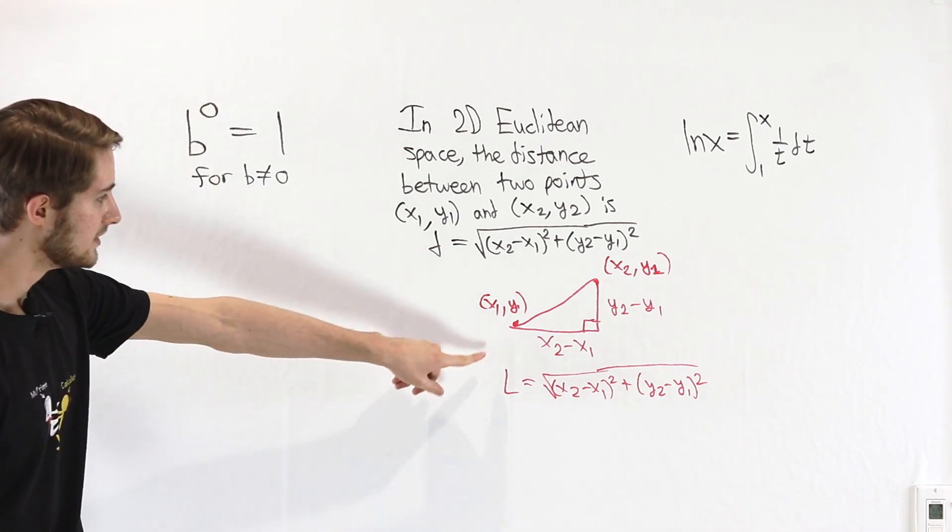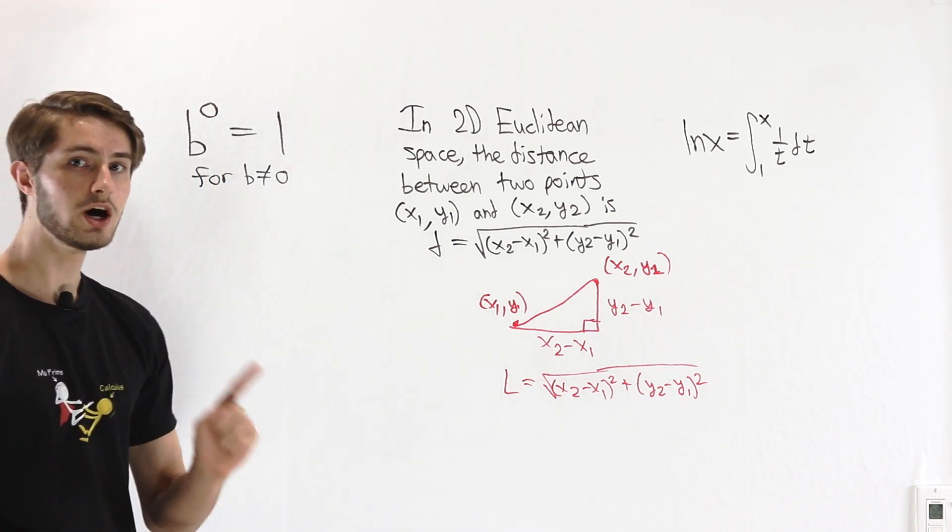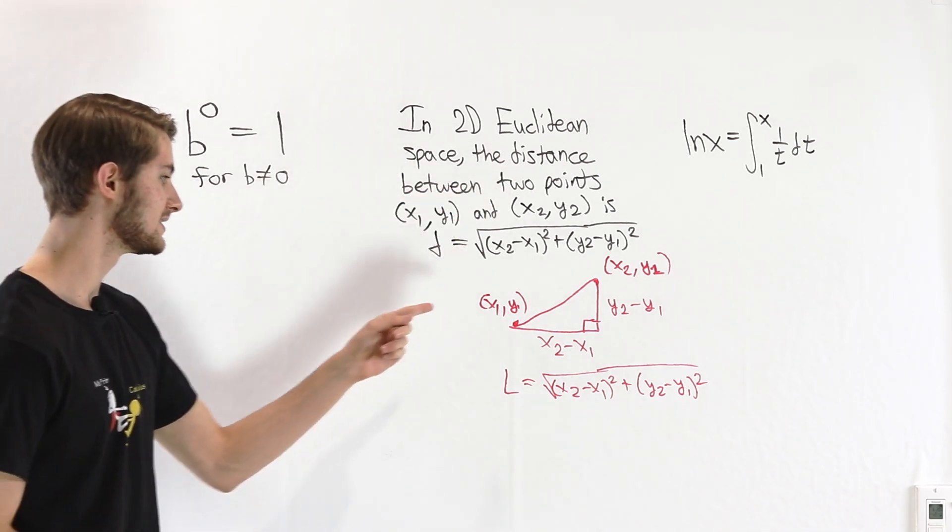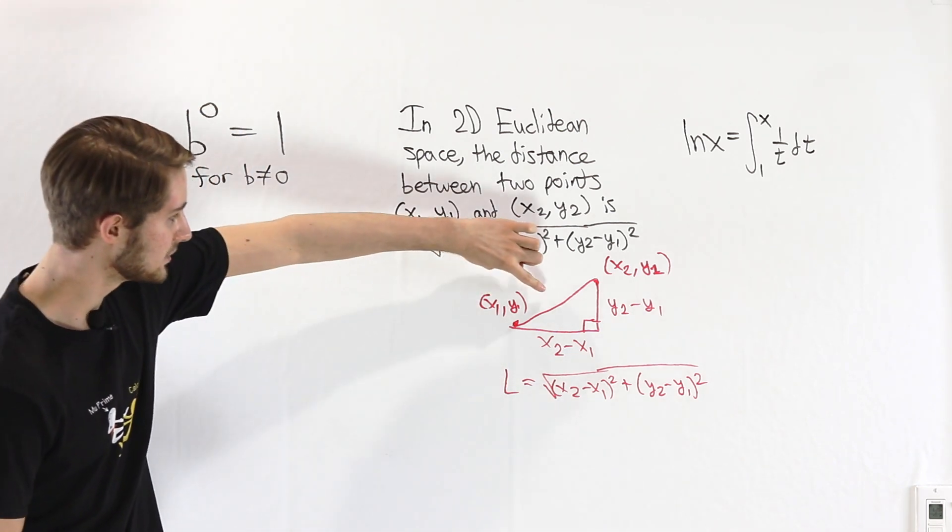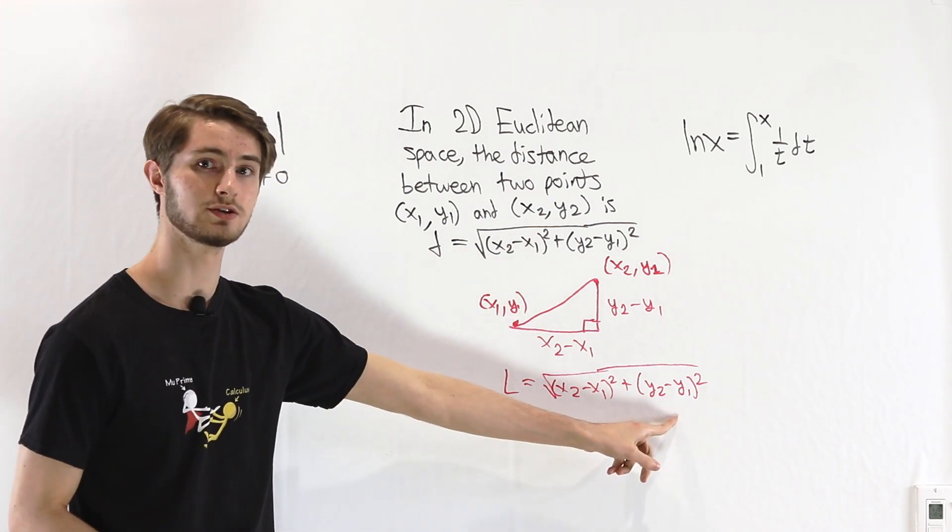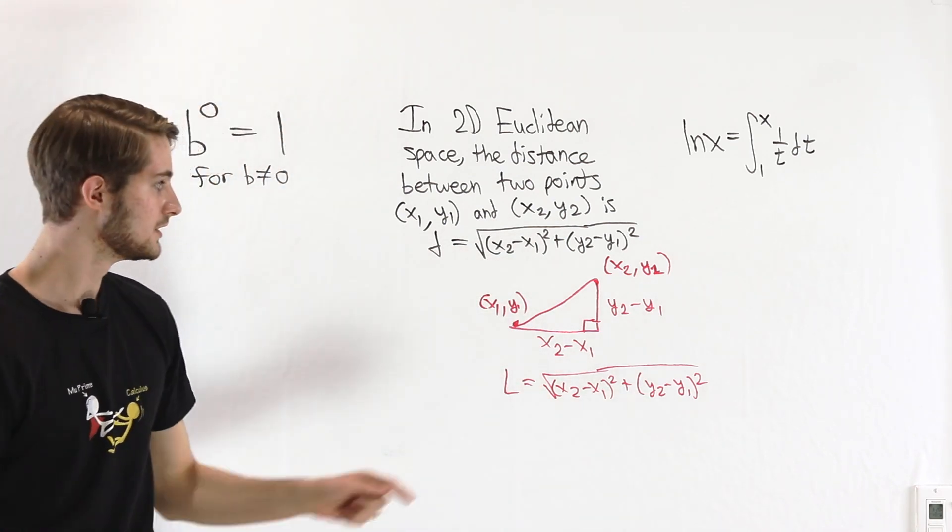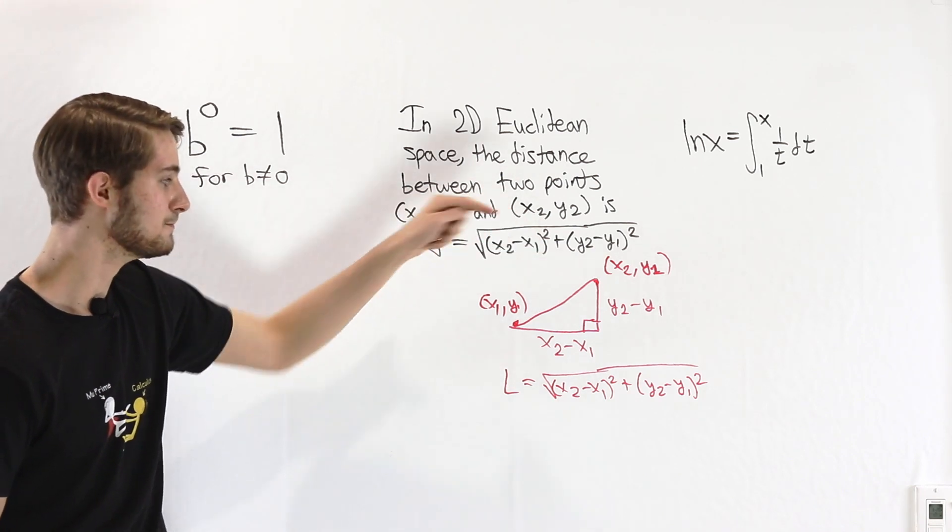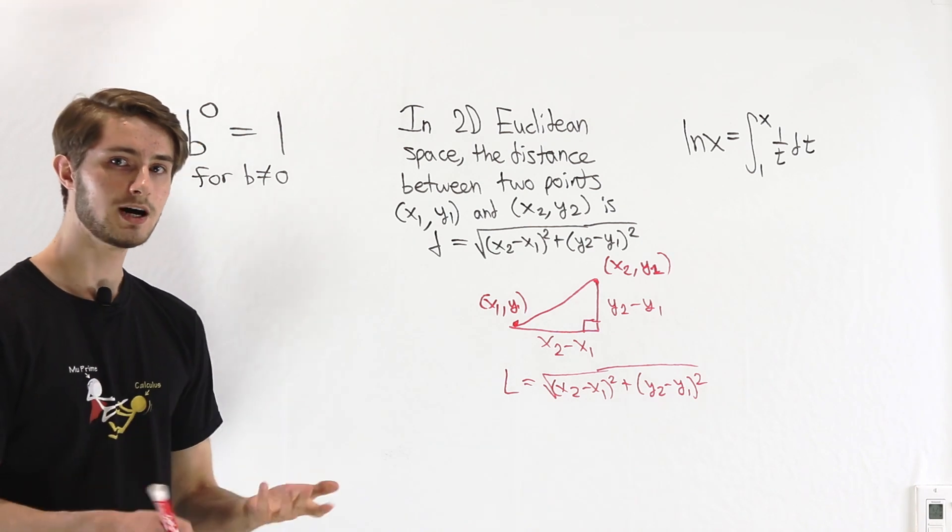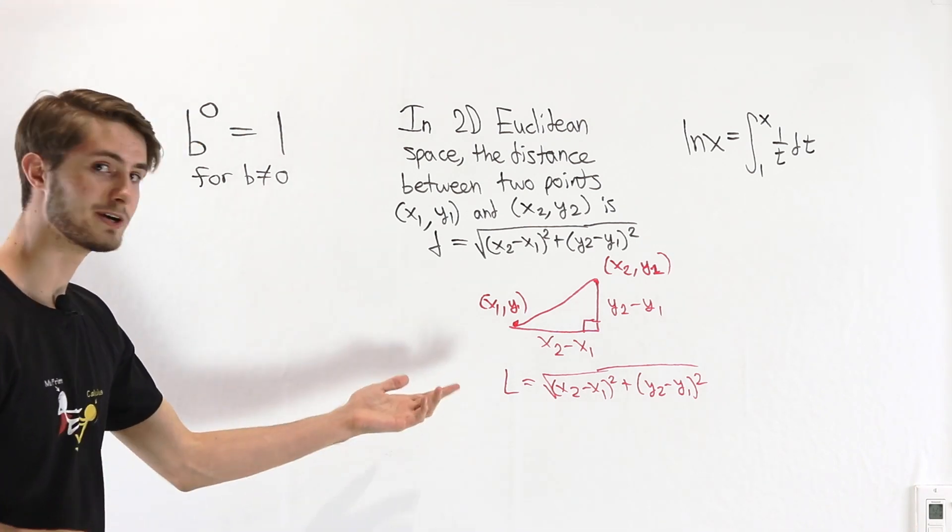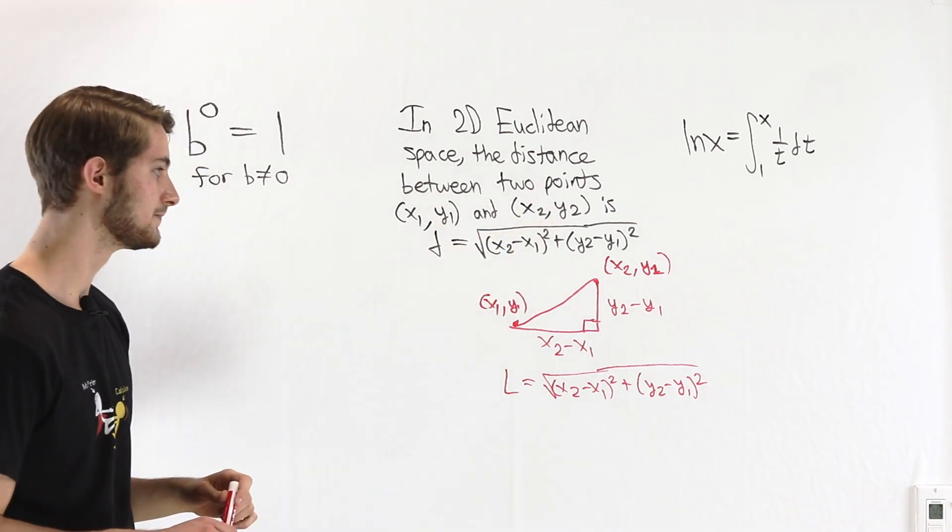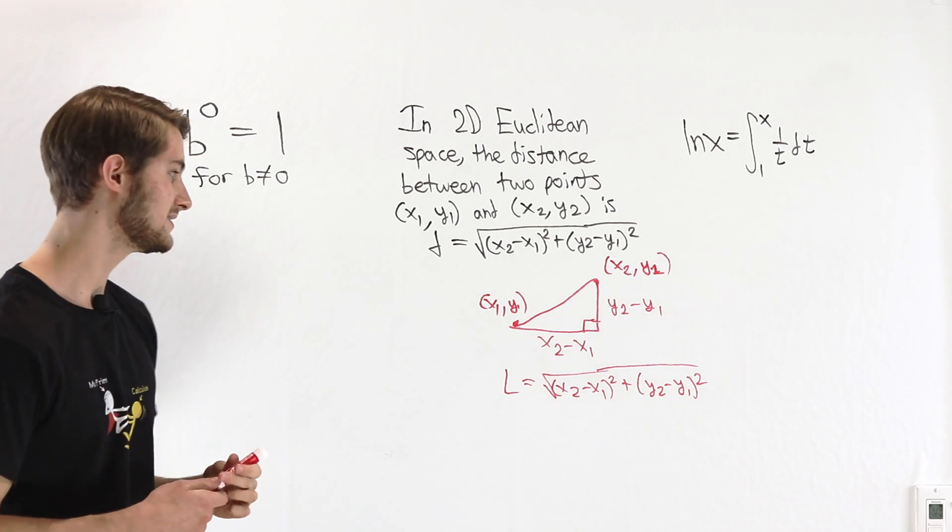Here's the issue. This proof does not prove that in 2D Euclidean space, the distance between two points is this length. We have proved that the length of the line segment connecting these two points is this square root value. But we didn't prove that the length of this line segment must be our definition of Euclidean distance. And it might seem obvious at first that when we're talking about the distance between two points, that has to be the length of the line segment connecting them. But that's not the only possible notion of distance.